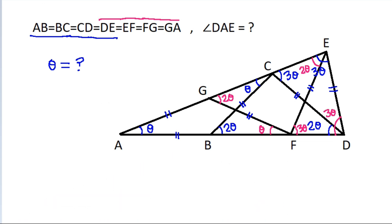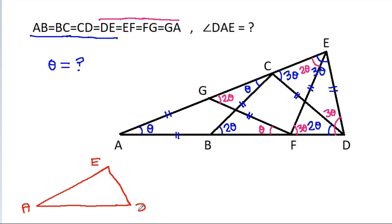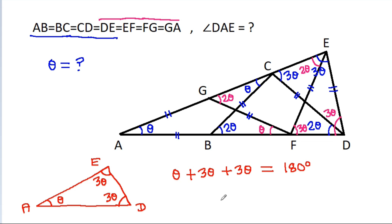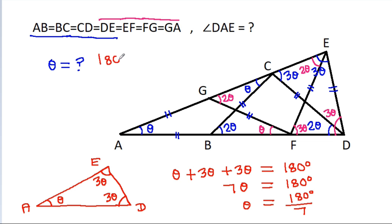And now in triangle AED, this angle is theta, this angle is theta, and this angle is 3 theta. So theta plus 3 theta plus 3 theta will be 180 degrees. And 7 theta is equal to 180 degrees. So theta is 180 degrees by 7.